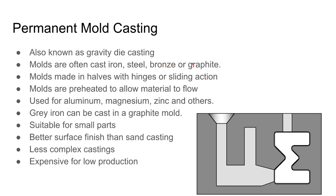The molds in permanent mold casting are commonly made from cast iron, steel, bronze, or graphite. They can come together in different ways — one common method is a hinged mold arrangement. Another option is a sliding action, similar to how an injection mold or die casting arrangement works. The molds are preheated and lined with a refractory release agent called a mold wash.